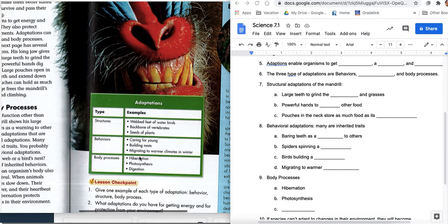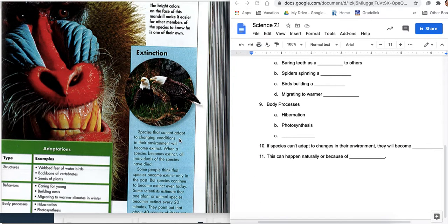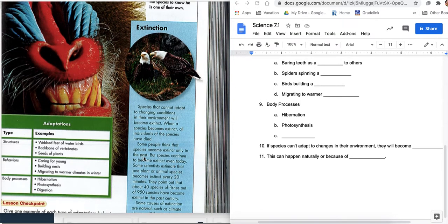Last but not least is this extinct one. Species that cannot adapt to changing conditions in their environment will become extinct. Number 10, when a species becomes extinct, all the individuals have died. Some people think that species became extinct only in the past, but species continue to become extinct every day. Some scientists estimate that one plant or animal species becomes extinct every 20 minutes. They point out that about 40 species of fishes out of 950 species have become extinct in the past century.